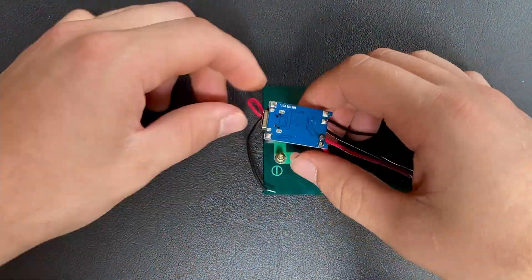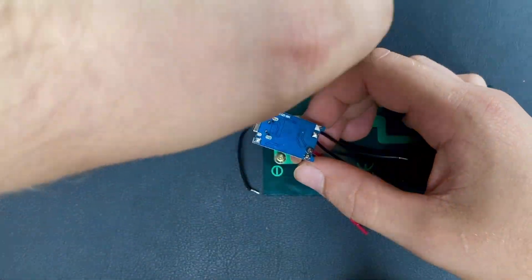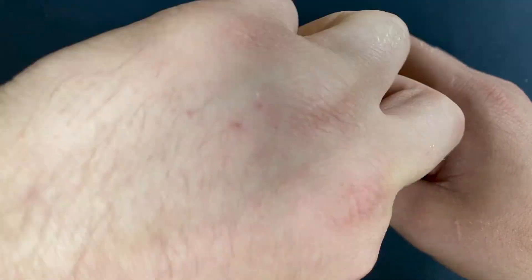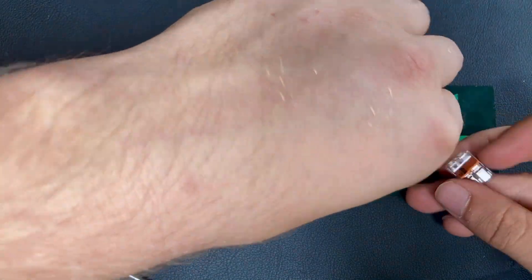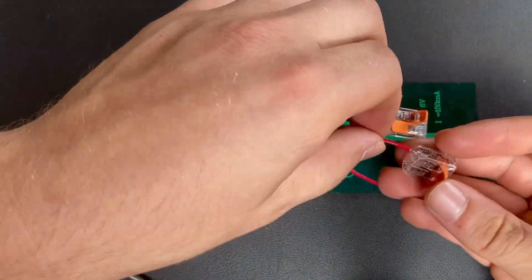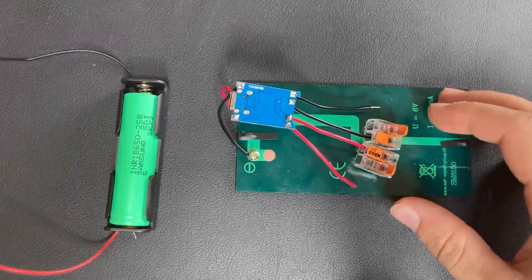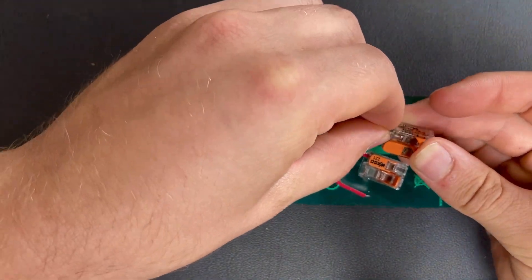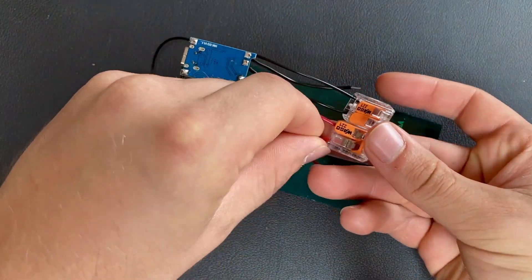To connect our solar module, we can just use the screw clamps on the back. After that, we could solder a battery holder directly to the TP4056, but I chose to use some clamp connectors, so that I can easily replace parts if they break. Now we just have to put the battery into the battery holder.